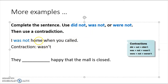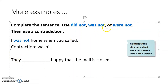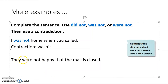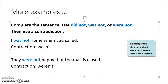Last example: they blank happy, the mall is closed. 'They' is more than one person — 'were' is for a group, and 'they' is a group. So: they were not happy that the mall is closed. Now for the contraction — 'were not' becomes 'weren't.'